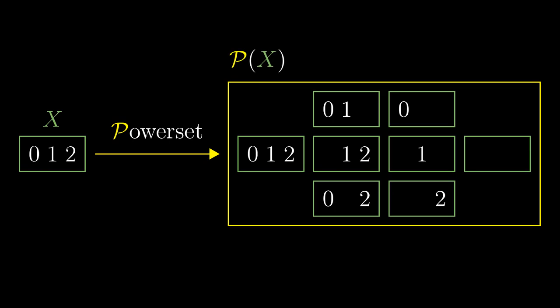Thus the resulting set is denoted P(X). We started with a set of size 3 and the resulting set has 8 elements, that is 2 to the power of 3. That is not a coincidence. For a subset we can decide whether to include the number 0, that's 2 cases, whether to include the number 1, again 2 cases, and whether to include the number 2. So the total number of subsets is 2 times 2 times 2, that is 2 to the power of 3.